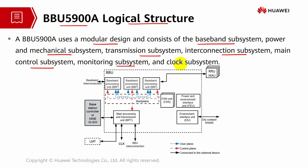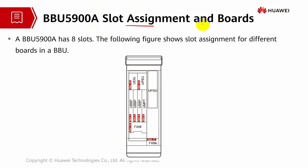The outdoor BBU also includes a main control subsystem, monitoring subsystem, and clock subsystem. Its components include the main processing and transmission unit, fan unit, power unit, power and environment interface unit, baseband unit, BBU interconnection, and clock system. The BBU 5900 series A slot assignment is slightly different — it has 8 slots compared to 11 slots in the earlier model. It has the UMPT card and UBBP card, with UPEU and the fan still in fixed slots. There is an additional fan at slot 17, and UPSU is the power module for this blade BBU.